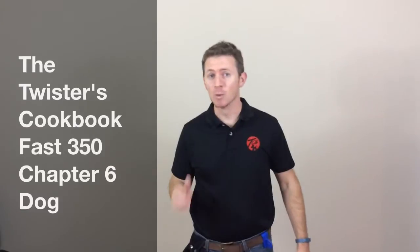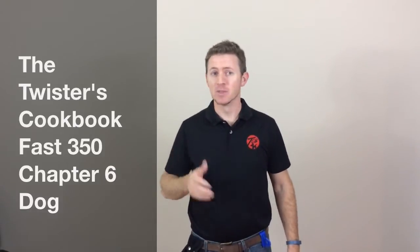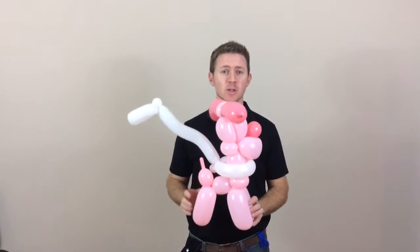Greetings YouTube! C.J. Nelson here from the Twister's Cookbook with another chapter of Fast 350s. This time we're going to be doing one of my favorites, the dog.